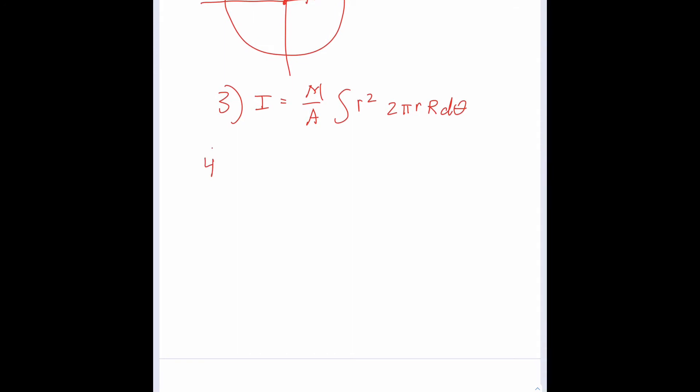Moving on, there's a constant and a constant and a constant that can be taken out of the integral sign. So now we have I equals 2πM capital R over A times the integral of r² and R gives us r³ dθ. Uh oh, now we have two variables and we want to turn it into calculus of a single variable, so let's find a way to substitute in place of r.